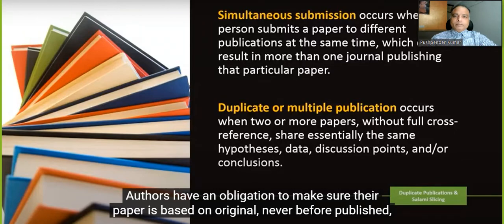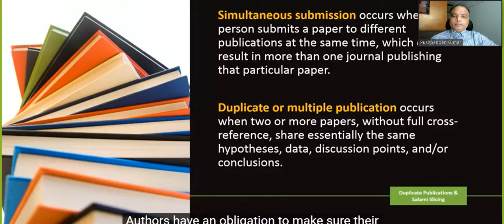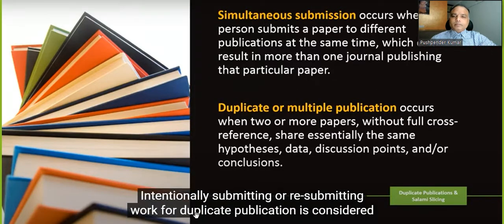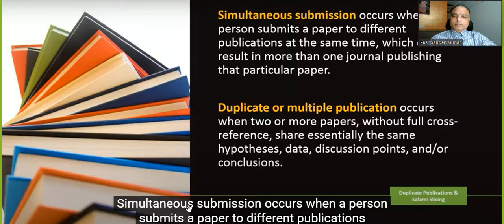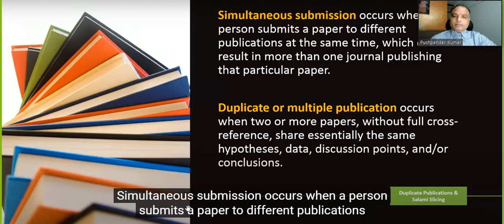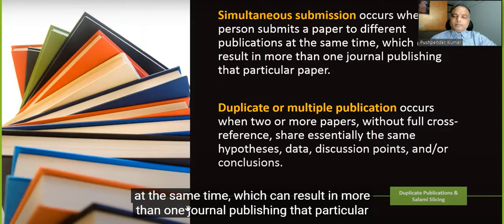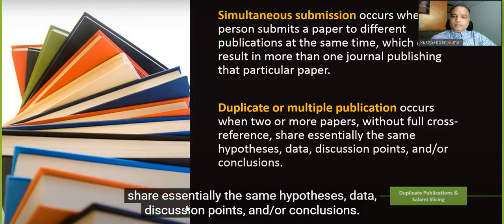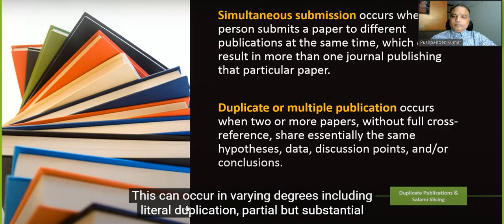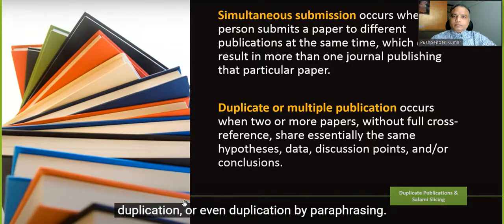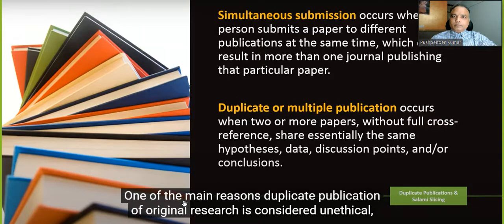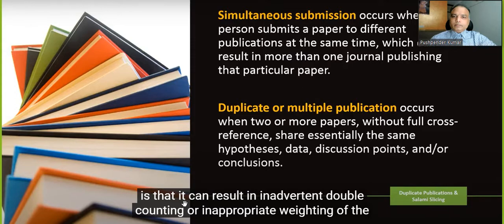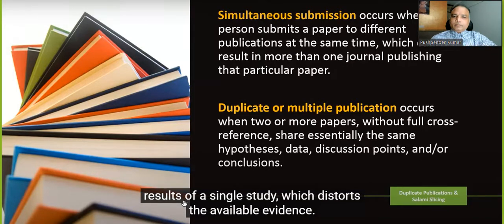Authors have an obligation to make sure their paper is based on original, never-before-published research. Intentionally submitting or resubmitting work for duplicate publication is considered a breach of publishing ethics. Simultaneous submission occurs when a person submits a paper to different publications at the same time, which can result in more than one journal publishing that paper. Duplicate or multiple publication occurs when two or more papers without full cross-reference share essentially the same hypotheses, data, discussion points, or conclusions.